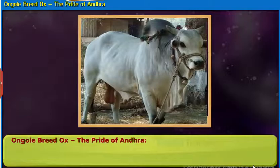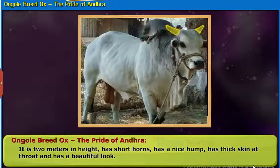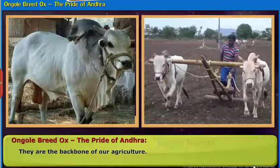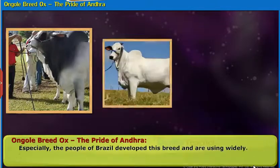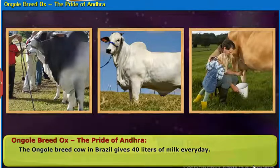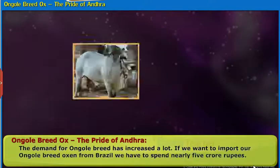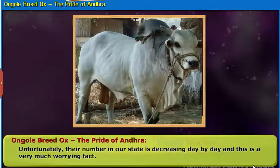Now let us study about the Ongole breed ox. The Ongole breed of oxen has become the best breed in the world. It is 2 meters in height, has short horns, a nice hump, thick skin at the throat and a beautiful look. They are the backbone of our agriculture. Europeans who migrated to our country took these oxen and cows to their countries for agriculture and milk production. The people of Brazil developed this breed widely — the Ongole breed cow in Brazil gives 40 liters of milk every day. Unfortunately, their number in our state is decreasing day by day.